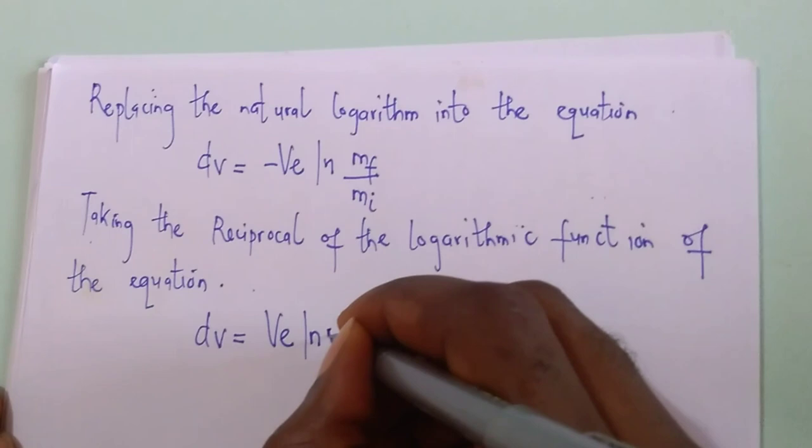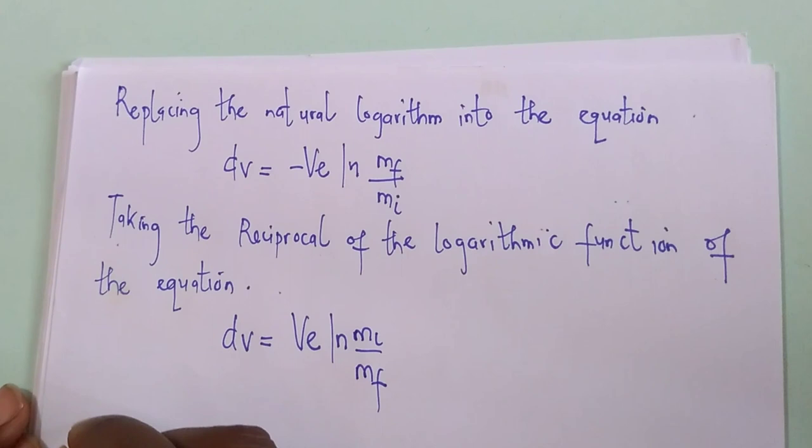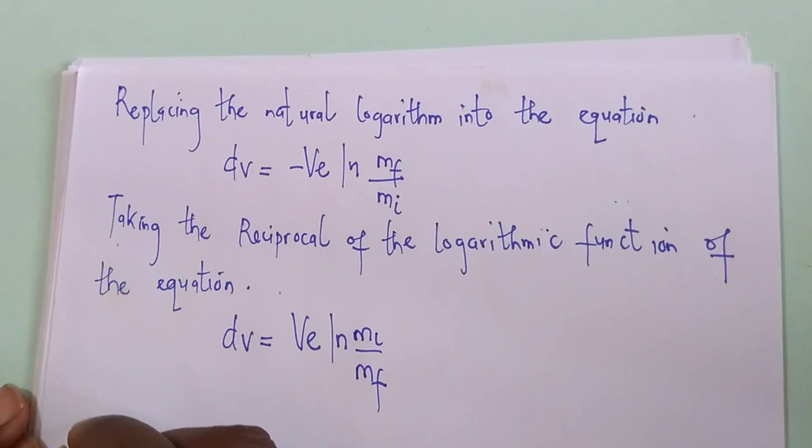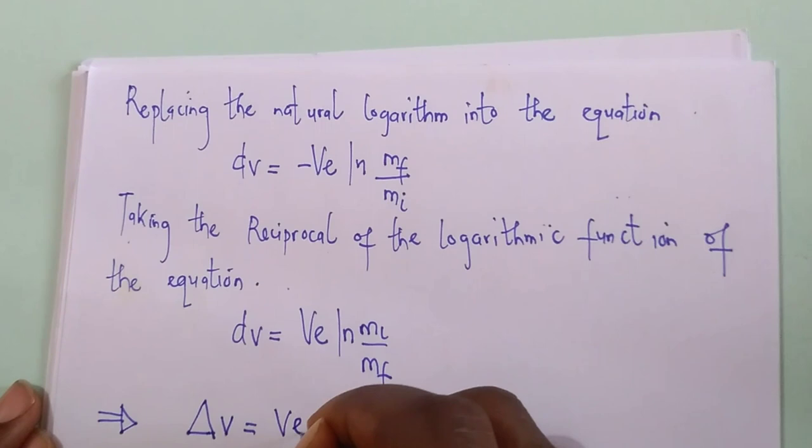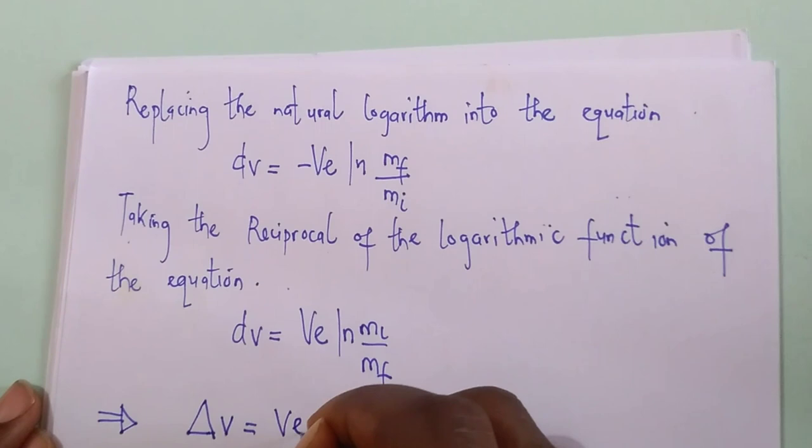There you have it. We have successfully proven the Tsiolkovsky rocket equation, which states the change in velocity equals to the exhaust velocity multiplied by the logarithmic function of the initial mass to the final mass.